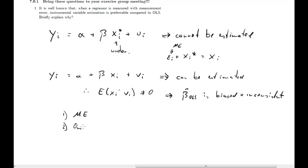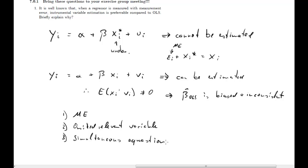The second reason is an omitted relevant variable — you know that from semester one. The third is simultaneous equations, which is the case when not only y depends on x, but also x depends on y. If we are not taking this into account and only look at one direction of that relationship, we end up with this problem. This third case is not really the main focus of the lecture, but I wanted to mention it.